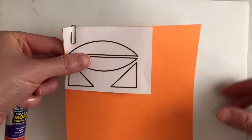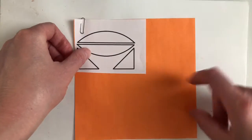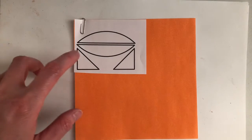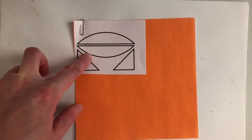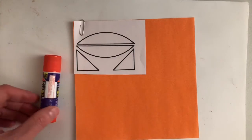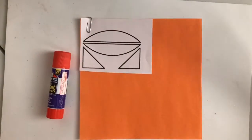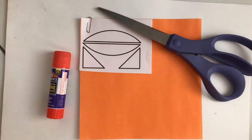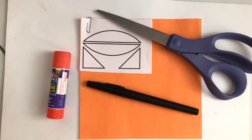For this project we'll need an orange sheet of origami paper and a bunch of white shapes. We'll need a glue stick, a pair of scissors, and a black felt tip pen.